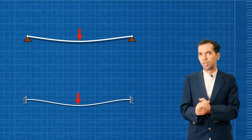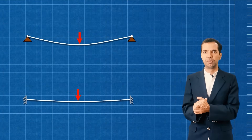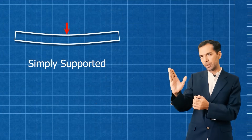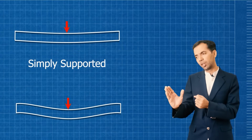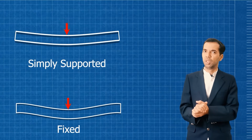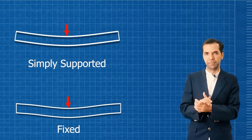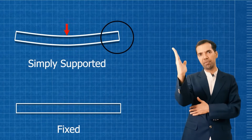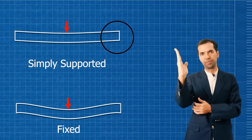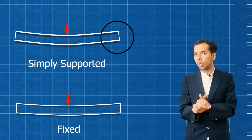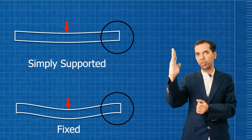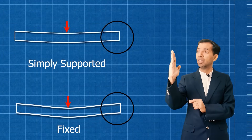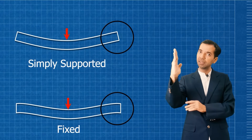Now, what we are doing is taking the deflection curve we have drawn for simply supported as well as fixed and drawing it in a double line. See — the double line deflection curve for simply supported, and also have a look at the double line deflection curve when it is fixed. When it is simply supported, this particular vertical face is getting rotated. But if you talk about a fixed connection, this particular vertical face is not getting rotated — it is steady. So here is the main difference.